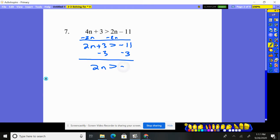2n > -14, and now divide by 2. Does my inequality flip? No, because you're not dividing by a negative, so it stays. n > -7. I want you to try and remember what I said about why that inequality flips.